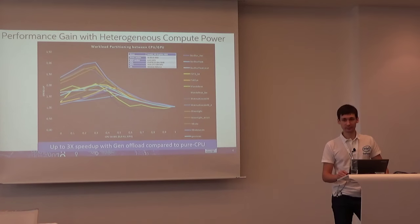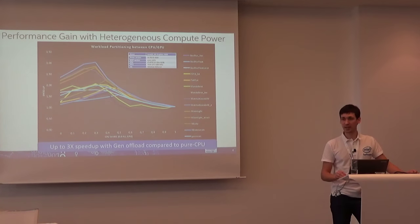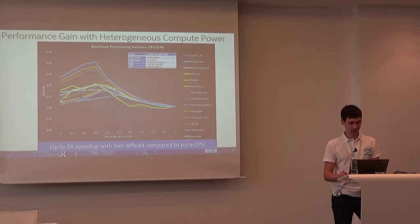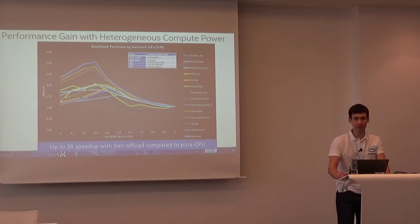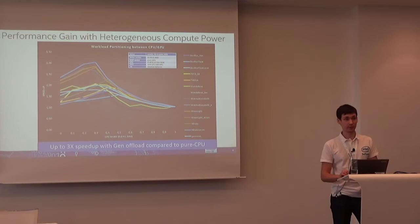We need to use this compute power if we are going to write really optimized applications and use all the hardware features we have. The gain we will get depends on our code and our hardware configuration. Here you can see a graph showing that you can speed up your application by three times using offloading to the graphics. However, it doesn't always give you this speedup. It's always some kind of balance between how much work you offload to the graphics and how much you still execute on the host. It also depends on the algorithm, which can be well or not really well suited to integrated graphics.